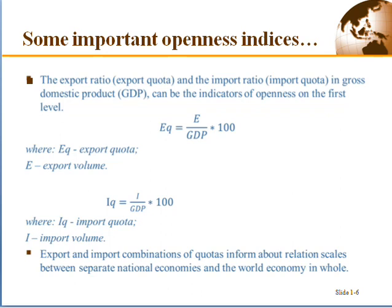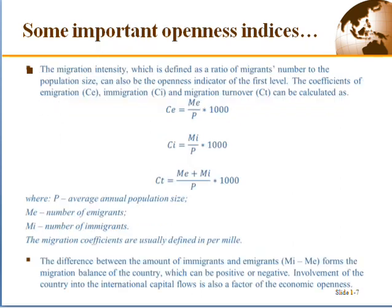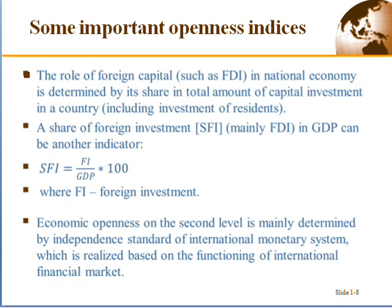Similarly, the import quota is calculated by taking the import volume divided by GDP and then multiplying by 100. Other indices measure the movement of people across borders — these include the coefficient of immigration, the coefficient of migration, and migration turnover. For population-related indices, values are classified per thousand, so you multiply per thousand rather than by 100.